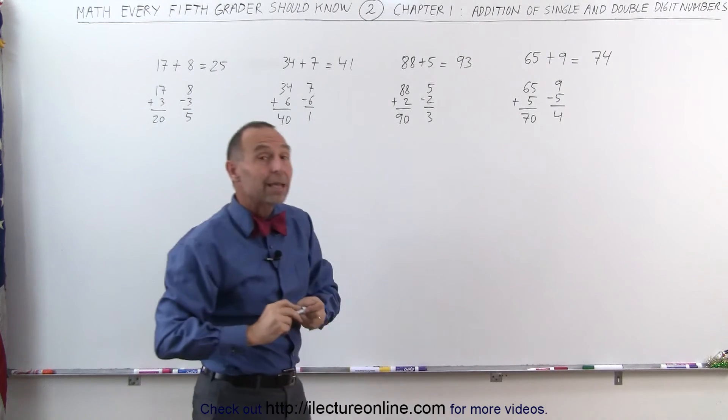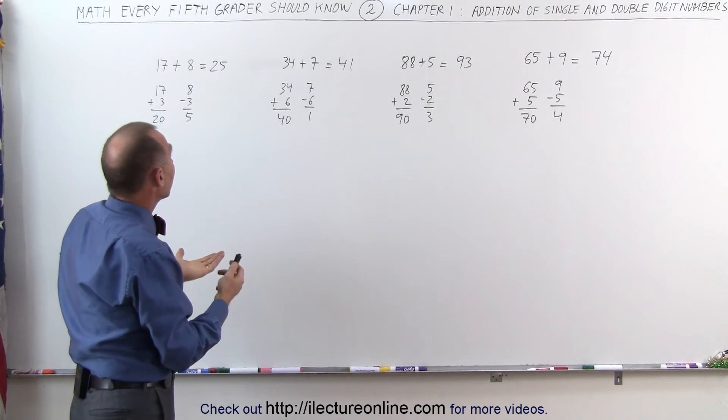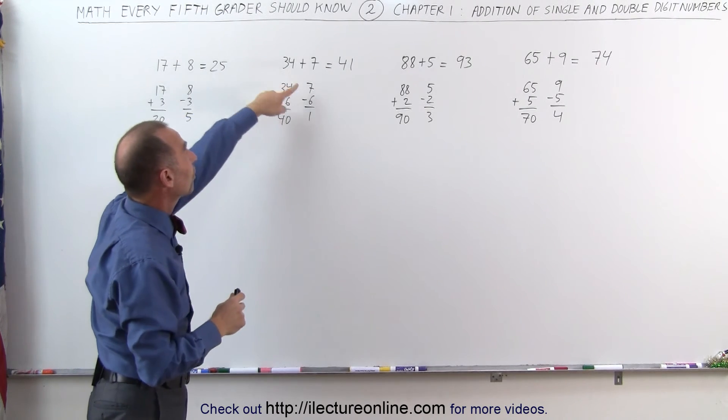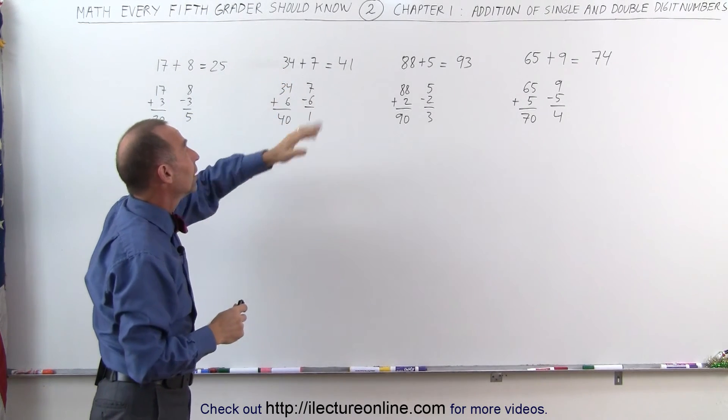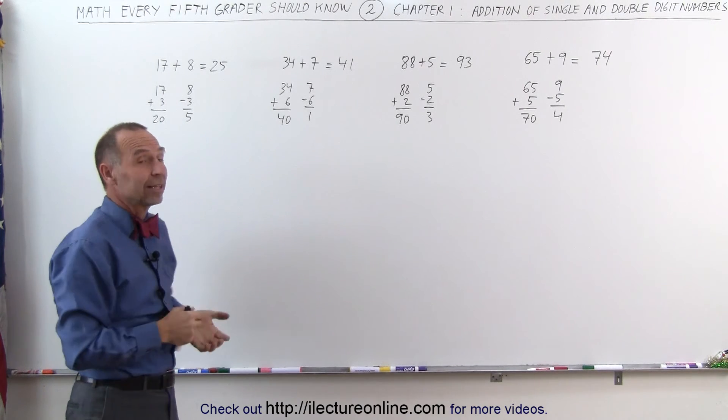And slowly but surely, if you keep practicing that, you start seeing that right away. You look at two numbers like that and you go, okay, how much more do I need to make that 40? Subtract the other one, add that to 40 and you get 41. That makes it a lot easier to add numbers like that together.